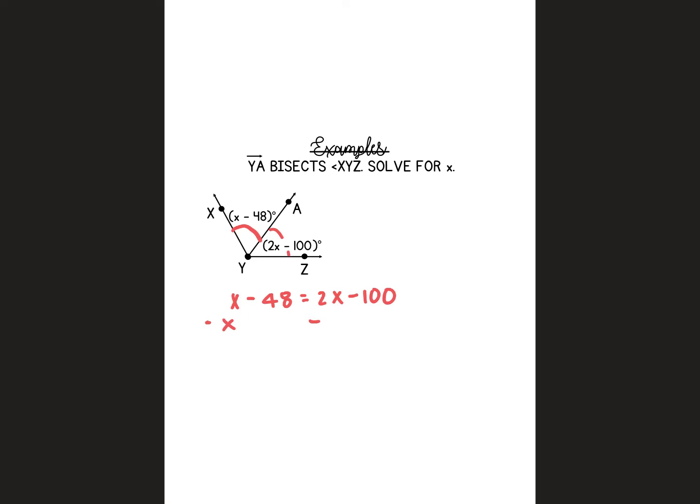Subtract x from both sides. These would cancel out, so I'm going to carry down my negative 48. 2x minus x is 1x, and then I'm going to carry down my negative 100. Add 100 to both sides. 52 equals x. And it said to solve for x, so that's all we're going to do.